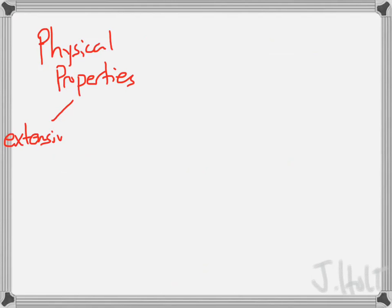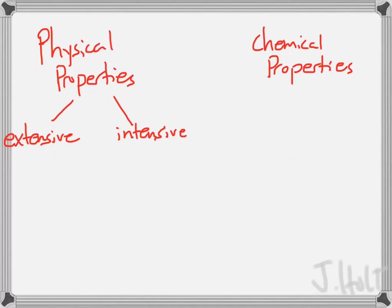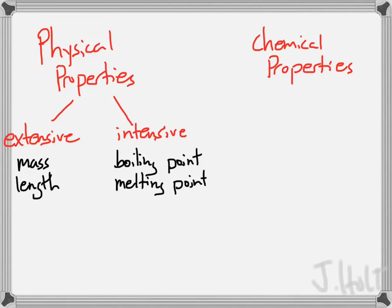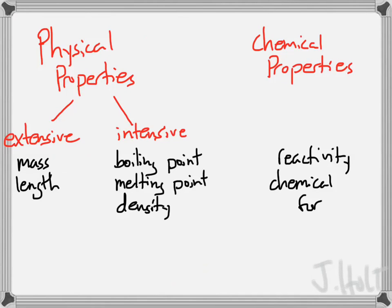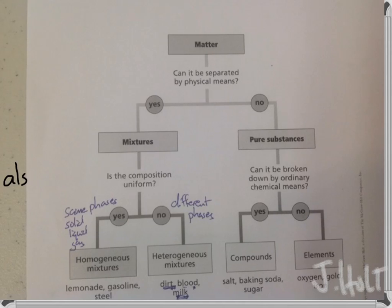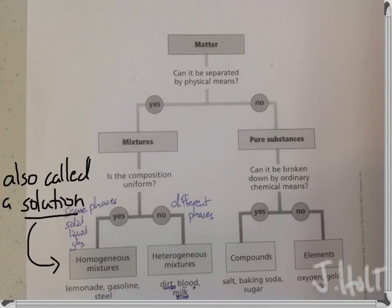Let's take a look at some physical properties. Physical properties are divided into extensive properties and intensive properties, and on the other side we have chemical properties. An extensive physical property would be like mass or length. An intensive physical property would be something like boiling point, melting point, or density. Chemical properties would be reactivity or the chemical formula of a compound. Extensive properties depend on the amount of something, while intensive properties don't change no matter how much of the substance you have.